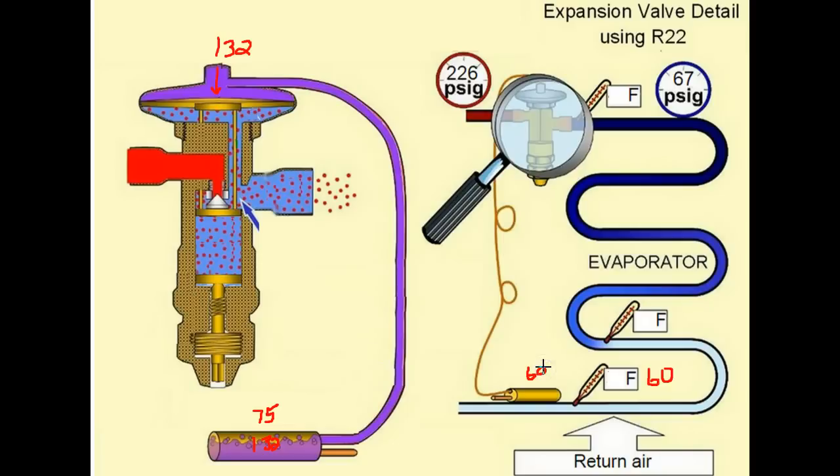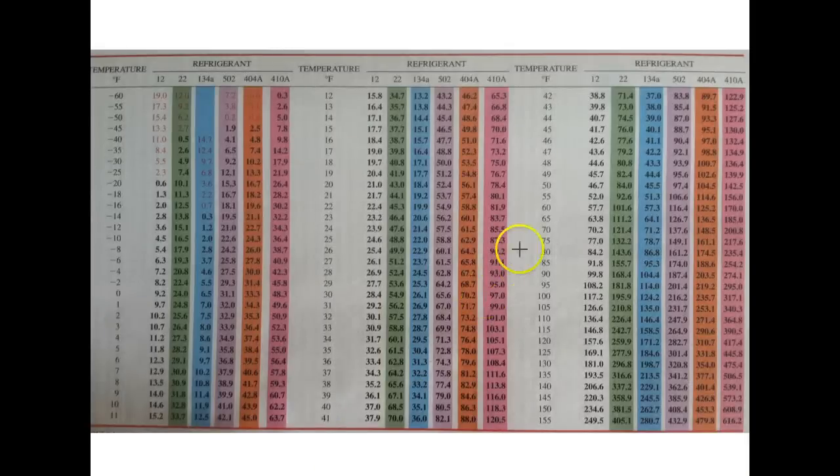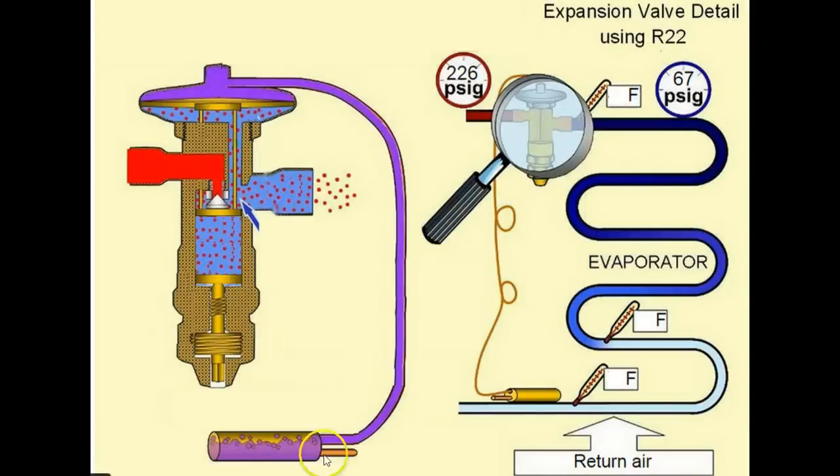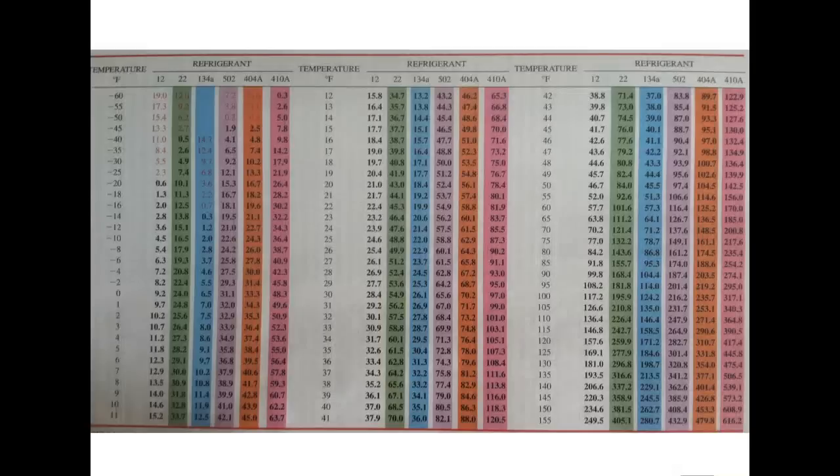And the sensing bulb is 60 degrees. And if we take a look at what 60 degrees pressure is, the relationship, the PT relationship. Let's look at 60. Now it's 102 PSIG.